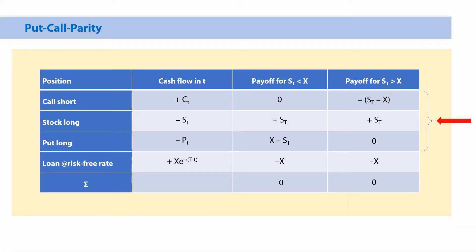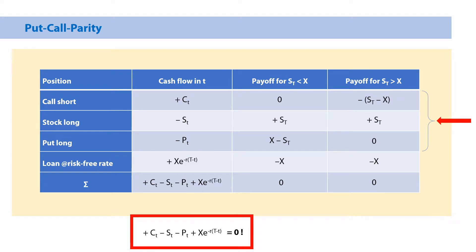If we put that all together, we have zero in total in both scenarios. We have arranged a portfolio of four financial instruments that for sure has no payoff no matter what happens. If the stock price goes up or goes down, the value of that portfolio will always be zero. What does it cost to get that portfolio? The combined cash flows — inflow from the call sold, outflow for the stock, outflow for the put, and inflow from the loan — together must also be zero, because if it has no value in the future, it cannot have a value now.